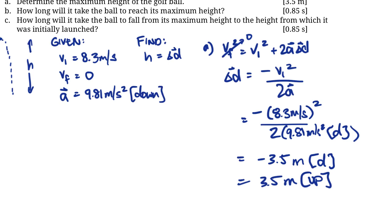Which makes sense — we would expect our answer to be upwards because the ball is thrown upwards. The tricky part of this question was just coming up with these assumptions for our values. Let's go on to part B.